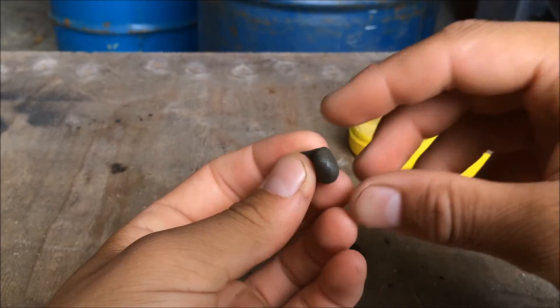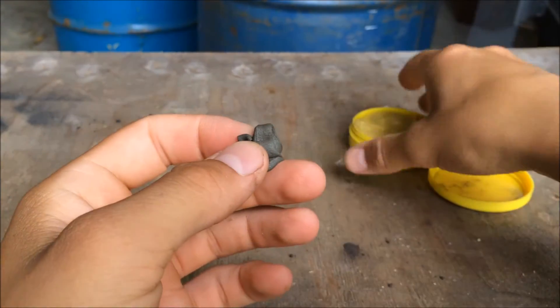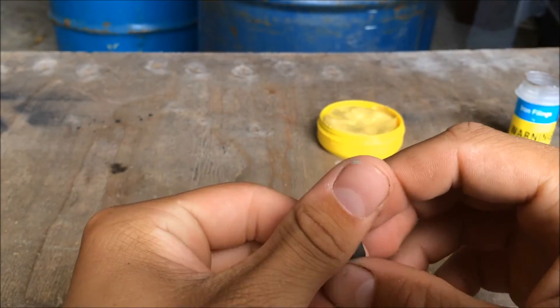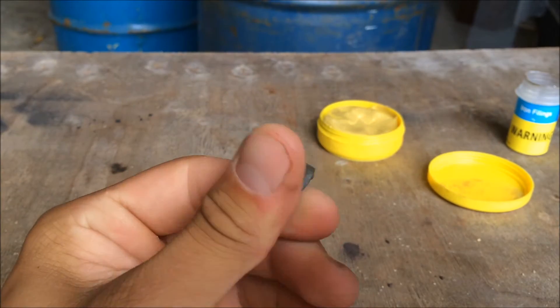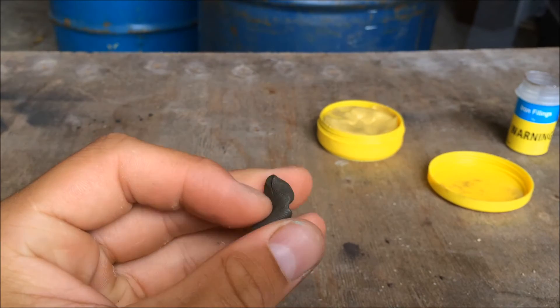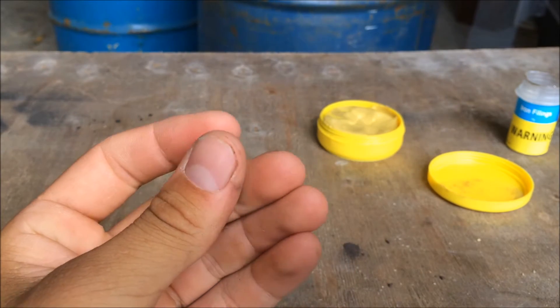So after about four minutes of mixing, I got it to look like this. It's from this yellow shiny color to, it's like a sort of greeny brownish color. It's almost black, so I'm going to go grab a magnet and see if I have successfully made some magnetic putty.